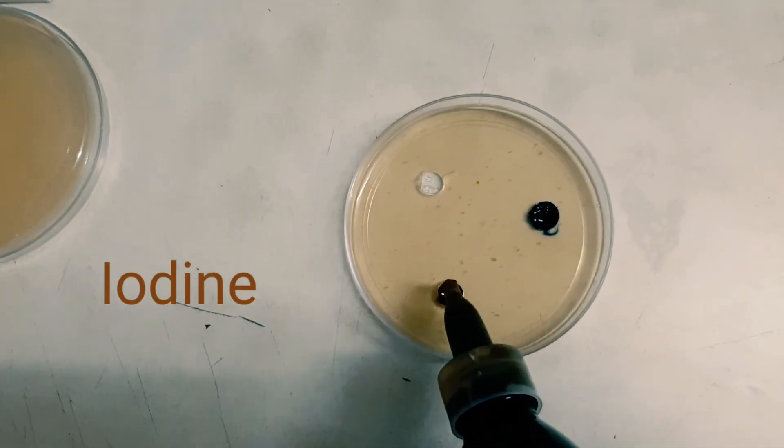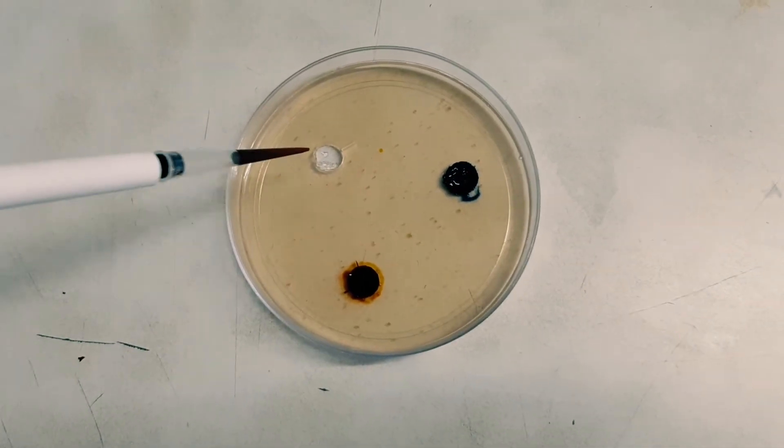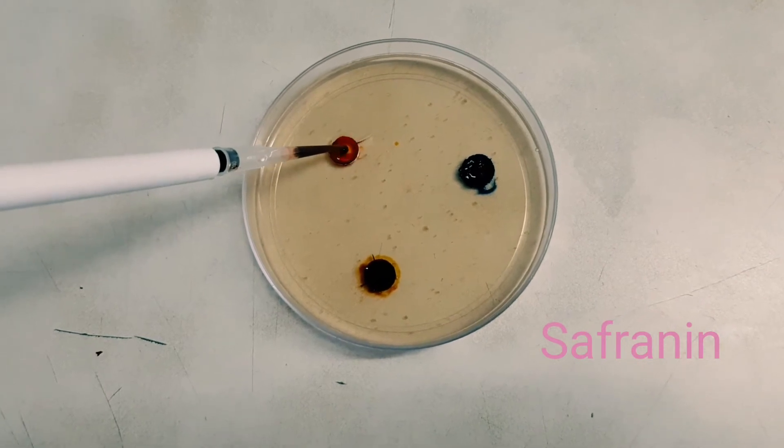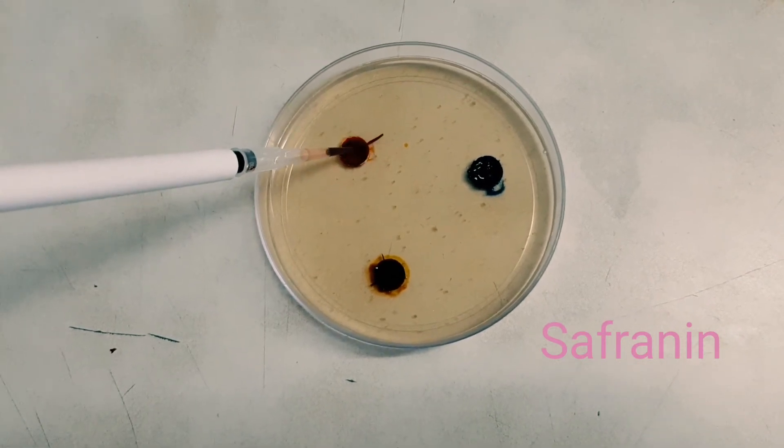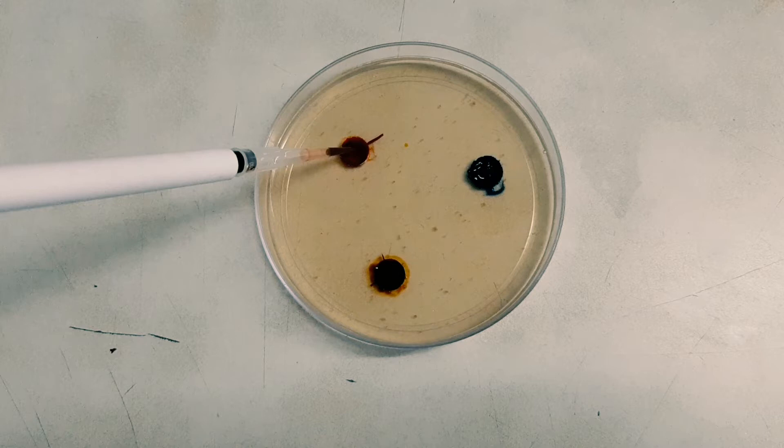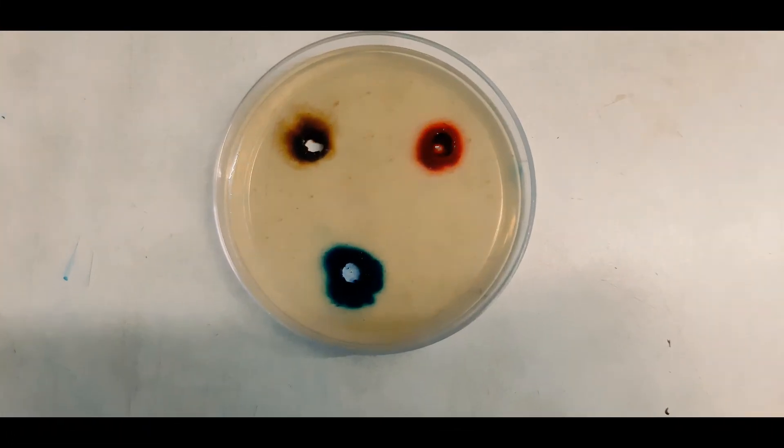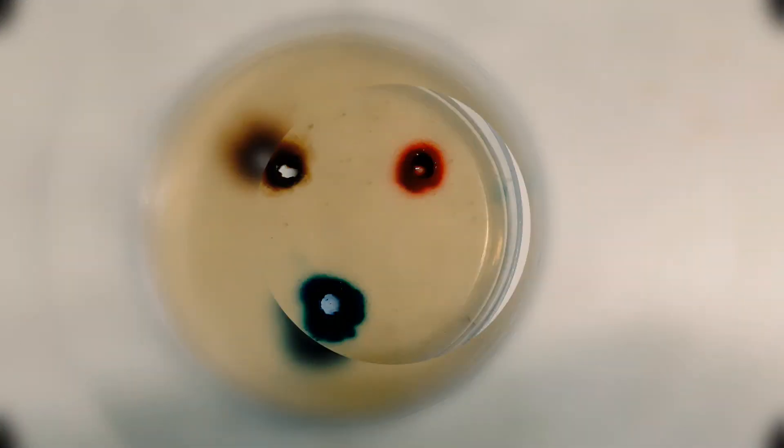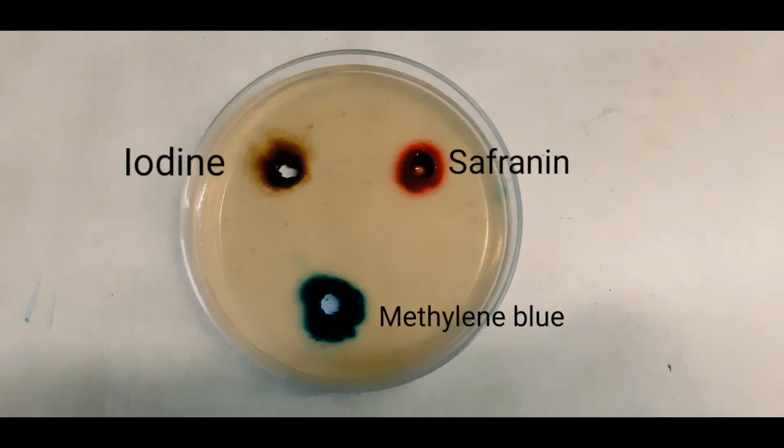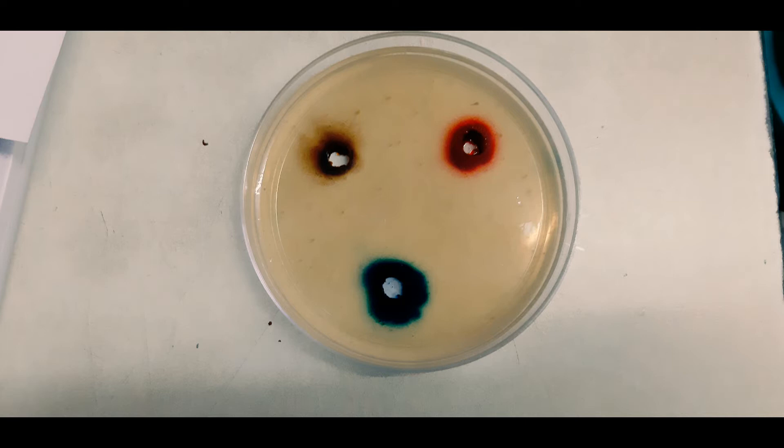Then iodine, then finally safranin which is pink in color. Then keep it aside for one hour. As you can see the dyes have been diffused into the agar plate depending on the size of particles. Here Methylene blue has diffused the most because of its smaller size. The particles have been diffused into the agar plate from a region of higher concentration to a region of lower concentration.